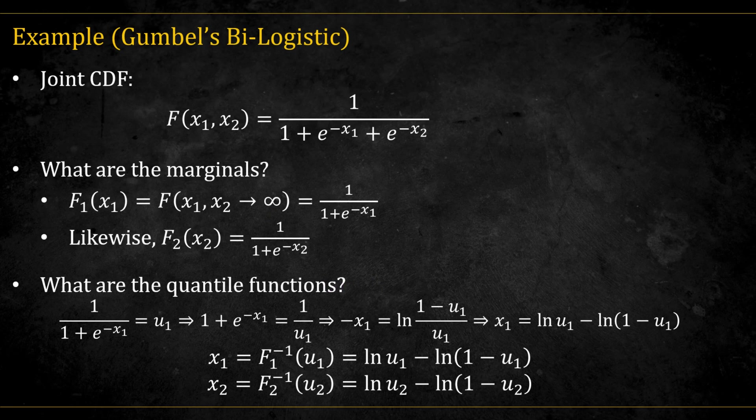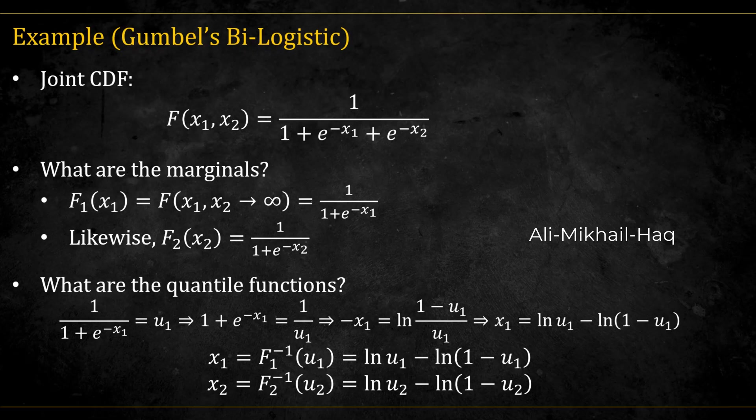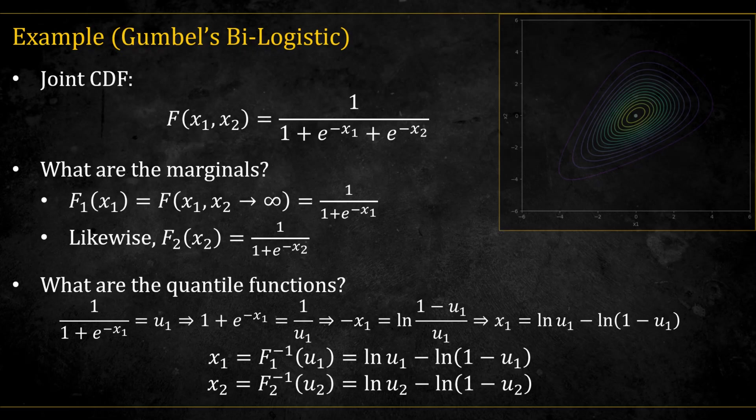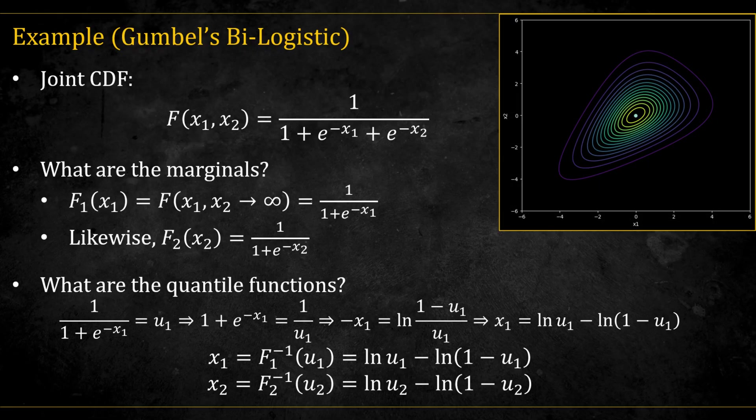An example is worth a thousand explanations. So let's take Gumbel's bivariate logistic distribution, which he introduced in 1961, and is part of the Ali Mikhail Haq copula family.